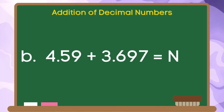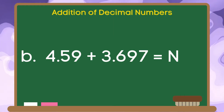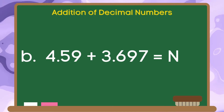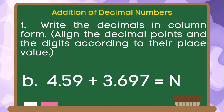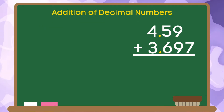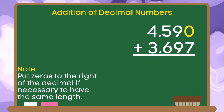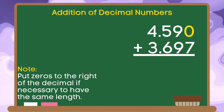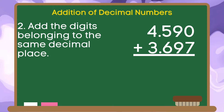Let's try another example. Let's add 4 and 59 hundredths and 3 and 697 thousandths. Step 1: write the decimals in column form. Remember to align the decimal points and the digits according to their place value. In this example, we can add 0 to the thousandths place value so that the decimal numbers have the same length. Step 2: let us add the digits belonging to the same decimal place.